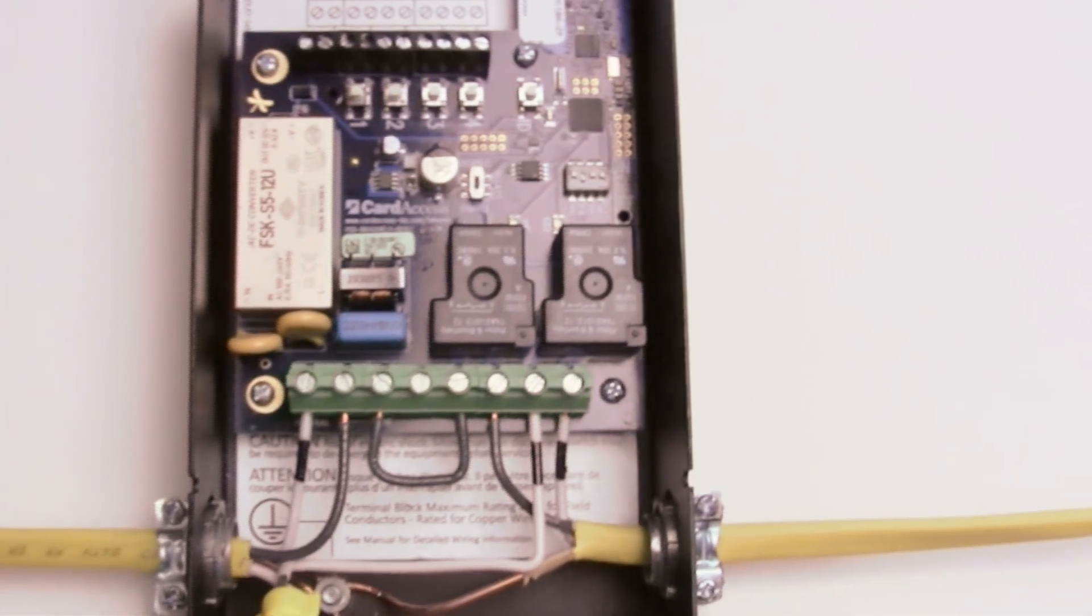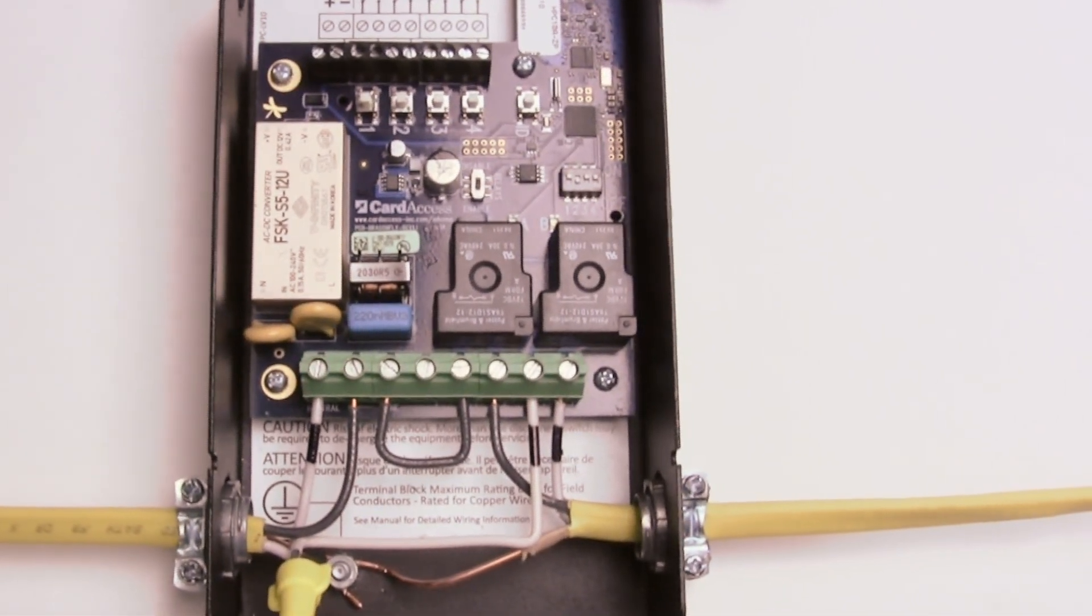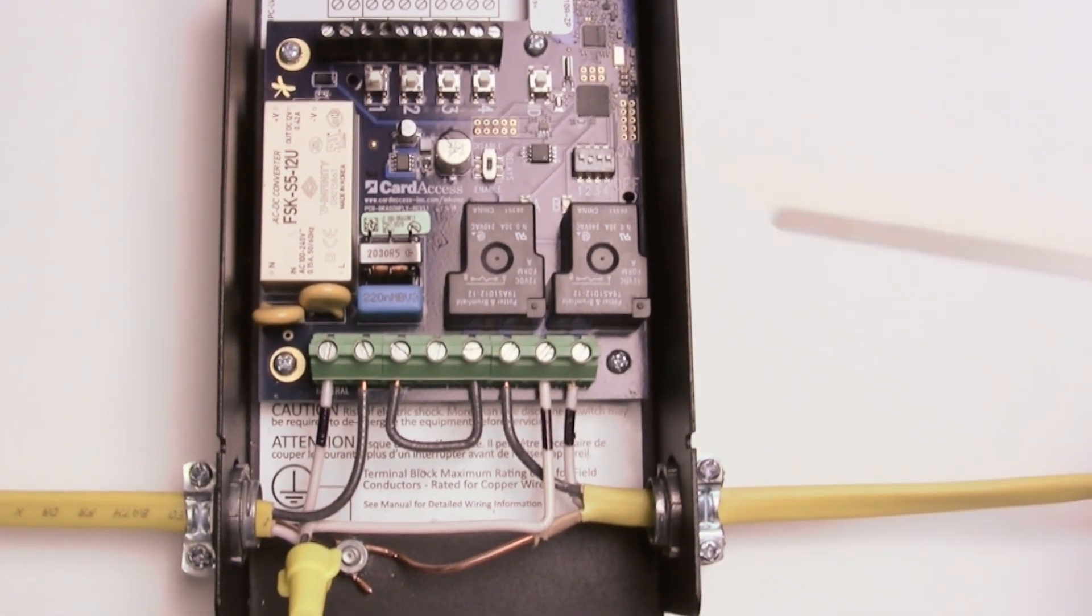You can still add it into C4, but when the dip switches are set like this, it basically prevents it from operating in any other way except for the 240 volt configuration.